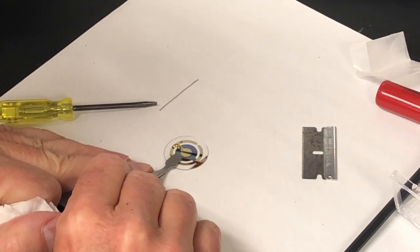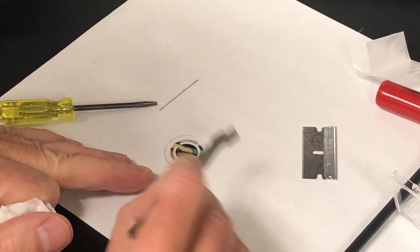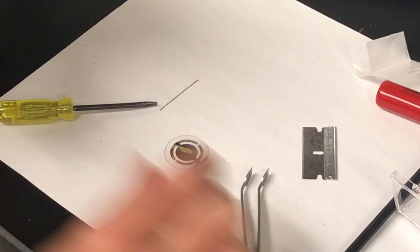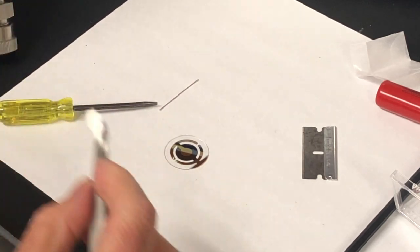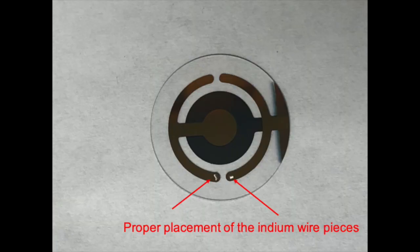And now we use the flat tweezers to carefully smash down the indium so that it flattens slightly and sticks to the crystal. Do not press too hard or you will crack the crystal. Here is what the smashed indium wire pieces should look like.